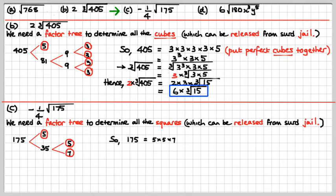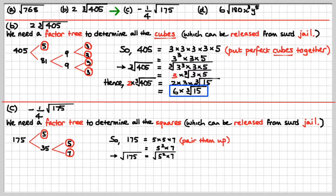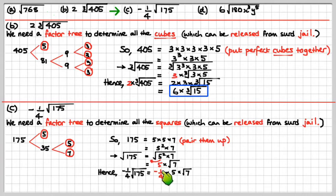This is a square root one. If there's no number in the little crook of the root sign, we assume it's a 2, which means square root. Now we pair them up: we've got 5 squared times 7. Therefore, the square root of 175 is the square root of all that — get the 5s out of square root jail as a 5, and poor old 7 is stuck there. But we have to do minus one quarter of that, which means minus 5 over 4 times root 7. That's the answer.